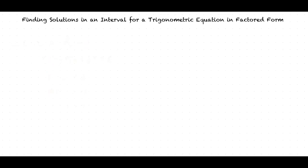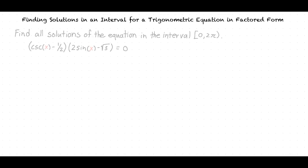I think I understand. Could we try out an example problem? Definitely. This problem is asking us to find all solutions of the equation in the interval 0 to 2π for the equation: cosecant x minus one-half, times 2 sine x minus square root of 3, equals 0.